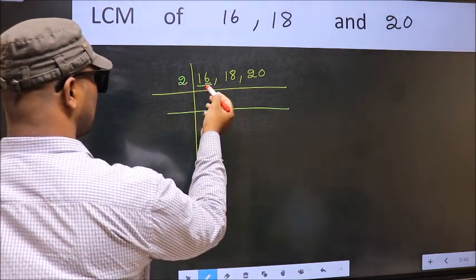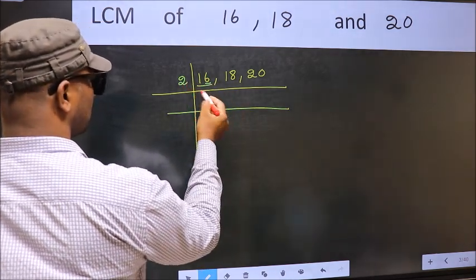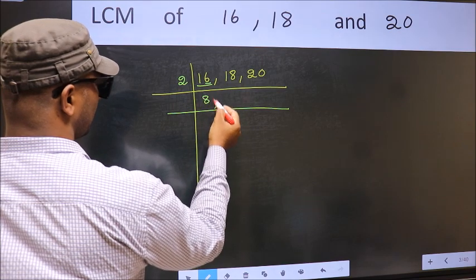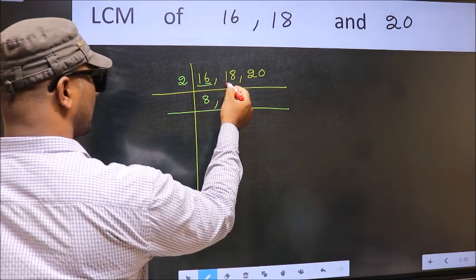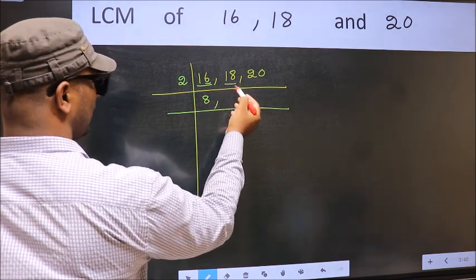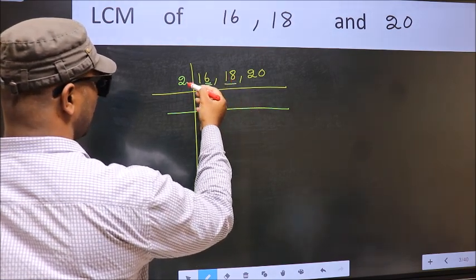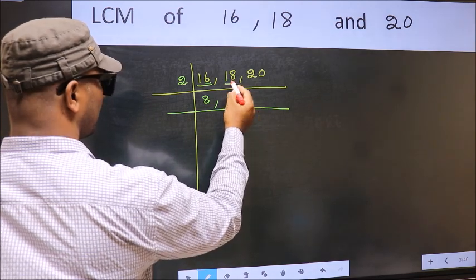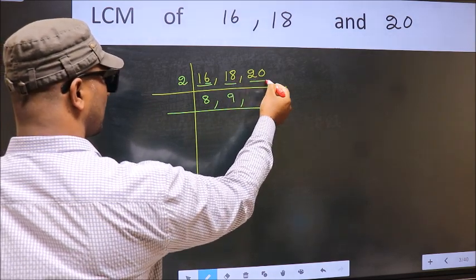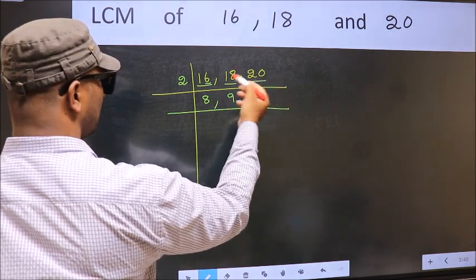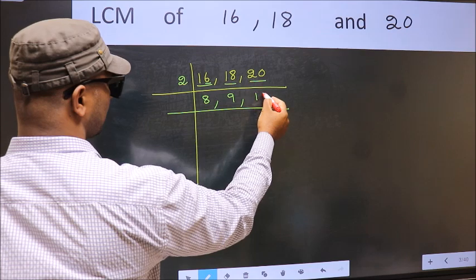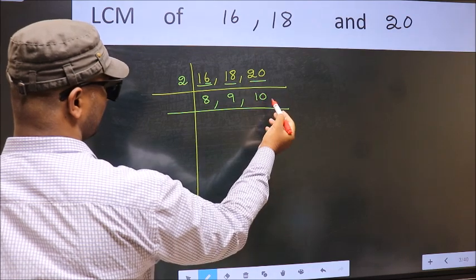When do we get 16 in the 2 table? 2 times 8 is 16. The other number 18 — when do we get 18 in the 2 table? 2 times 9 is 18. The other number 20 — when do we get 20 in the 2 table? 2 times 10 is 20.